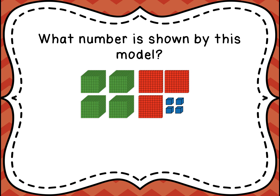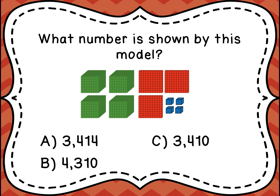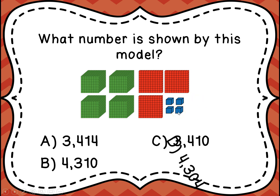Now it's time for a little quiz. You've got a model on the screen, and I want you to tell me what number is shown by this model. Is it A, three thousand four hundred fourteen; B, four thousand three hundred ten; C, three thousand four hundred ten; or D, four thousand three hundred four? If you told me that the correct answer was four thousand three hundred four — because there are four in the thousands place, three in the hundreds place, no tens rods, and four in the ones — if you said letter D, four thousand three hundred four, you would be correct.